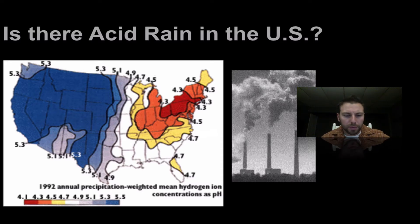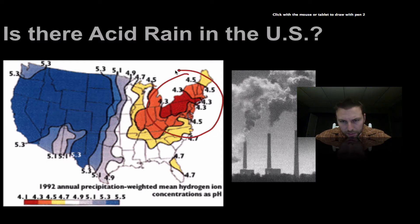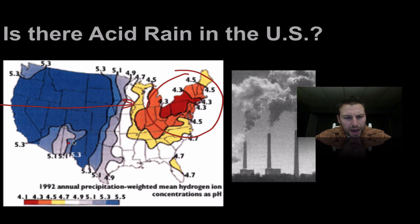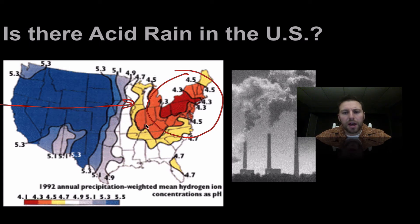Acid rain in the United States occurs in a number of different places, but specifically on the east coast we see a bit more of it. You might be able to figure out why — our prevailing weather patterns move across the United States from west to east. So any pollution that occurs over to the west is going to be carried over and fall here. There's also a huge amount of industrialization in this region, which helps form more acid rain, so the northeast specifically feels the brunt of it.